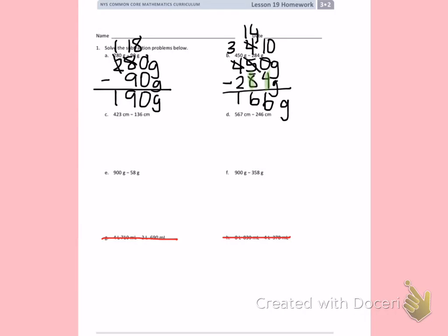Letter C. I have 423 centimeters minus 136 centimeters. In my ones place, I have a 3 and a 6. 6 is the bigger number, which is on the bottom. When the bigger number is on the bottom, I need to regroup. The 2 turns into a 1. The 3 turns into 13. 13 minus 6 is 7.